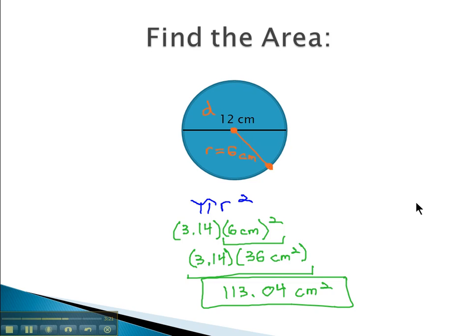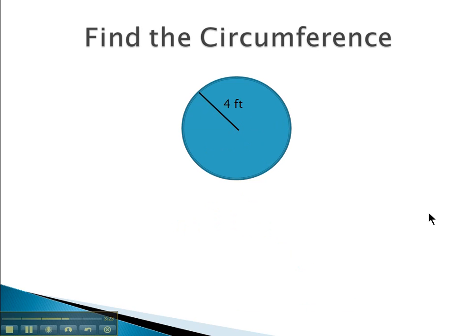Let's try another example. In this example, we're asked to find the circumference, or distance around the outside. We're told the distance from the center to the edge is 4 feet, which means center to edge. That's just the radius.